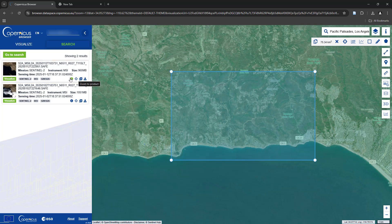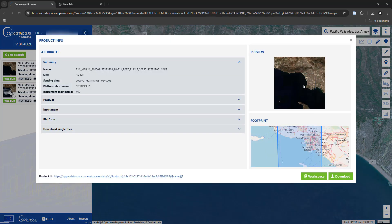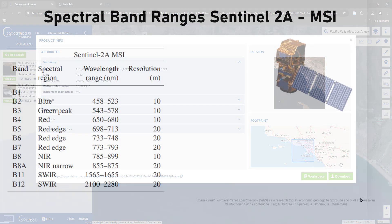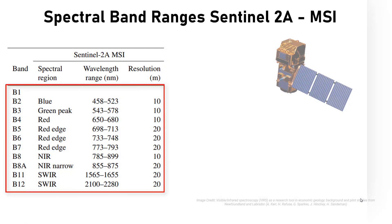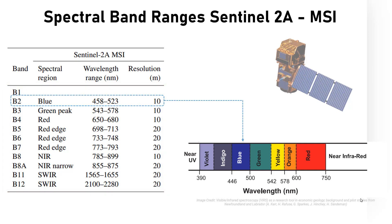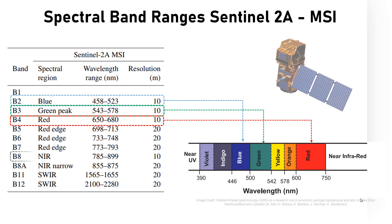You can download these satellite images completely for free. And when you download it, you don't really get just one image. But instead, what you get is a bunch of different spectral bands corresponding to various electromagnetic wavelengths. This includes three visible red, green, and blue bands, as well as a bunch of other wavelengths beyond the visible spectrum.